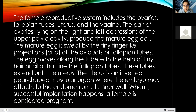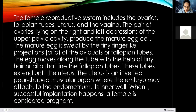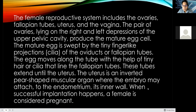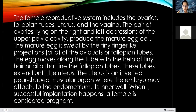The mature egg is swept by tiny finger-like projections called cilia — these are organs of locomotion. We have two organs of locomotion in the human body: first is the cilia, which looks like hair-like projections; the second one is the flagellum, or flagella, which is actually found in your sperm — the tail. These are the organs for locomotion of the oviduct or fallopian tubes.